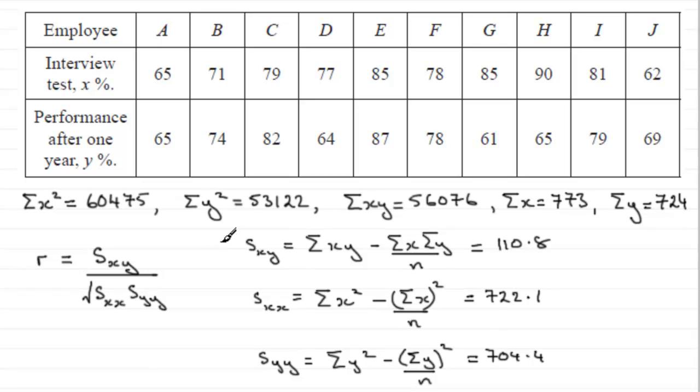And now, all you need to do is substitute these values then back into this formula here. And so, you're going to have SXY then, which is going to be 110.8, divided by the square root then of SXX, 722.1, multiplied by 704.4, SYY.